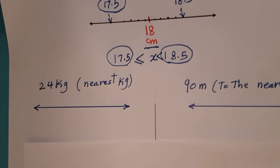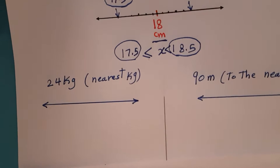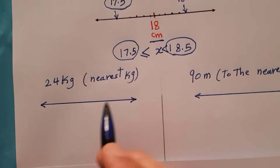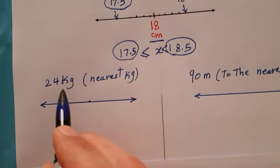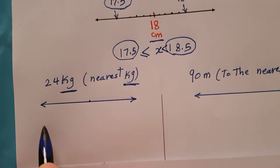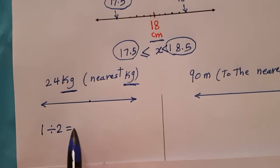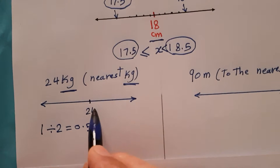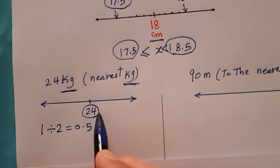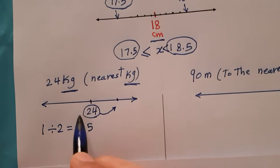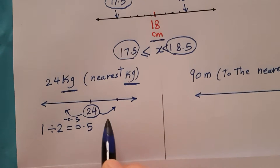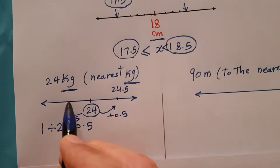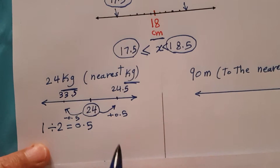Let me give you some easy examples. Consider you weigh something as 24 kilograms to the nearest kilogram. What is the upper bound and lower bound? The unit is 1, divide by 2 you get 0.5. So just add half to get the upper bound and subtract half to get the lower bound. Upper bound is 24.5, lower bound is 23.5. We write it as: x ≥ 23.5 and x < 24.5.